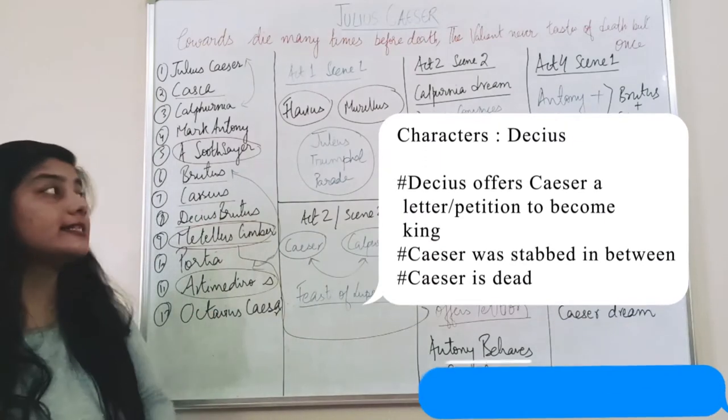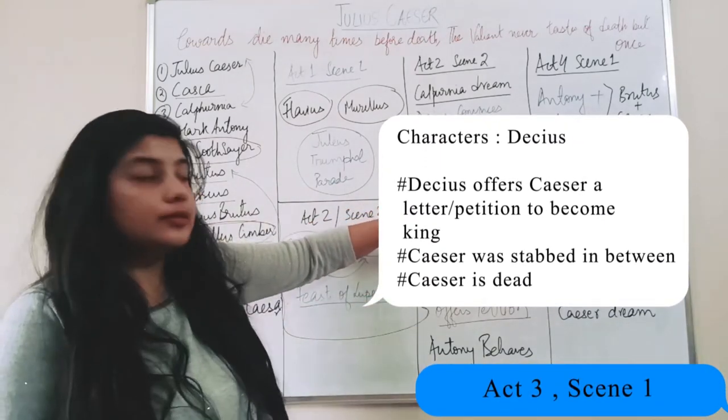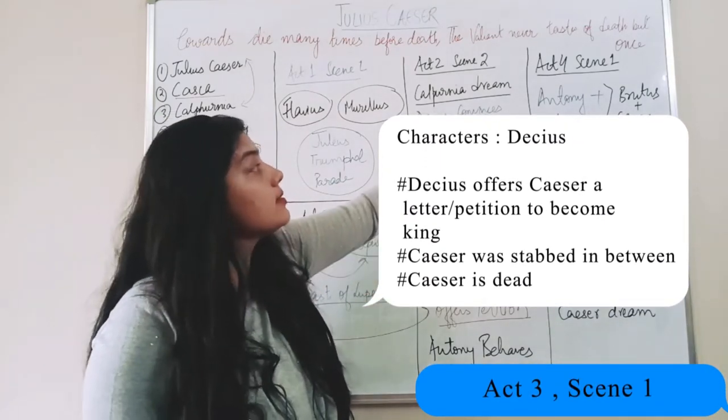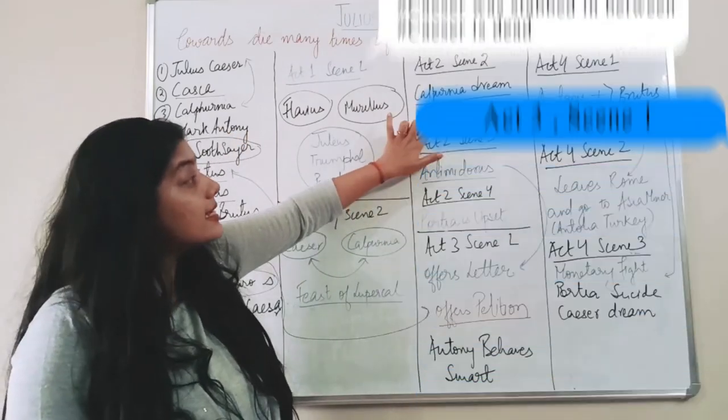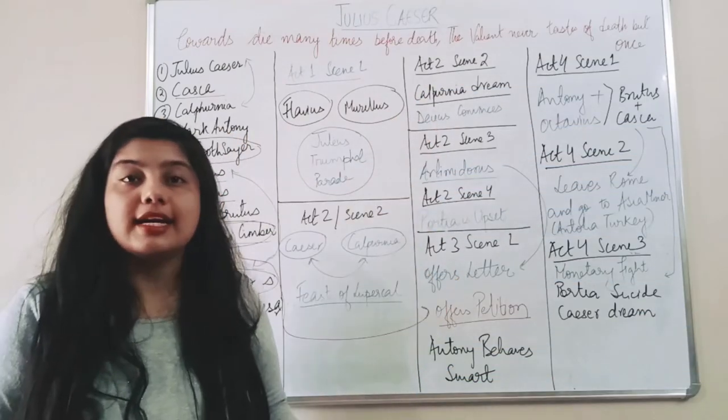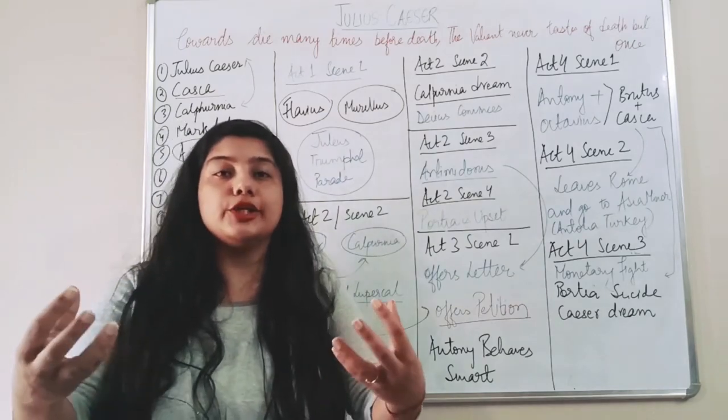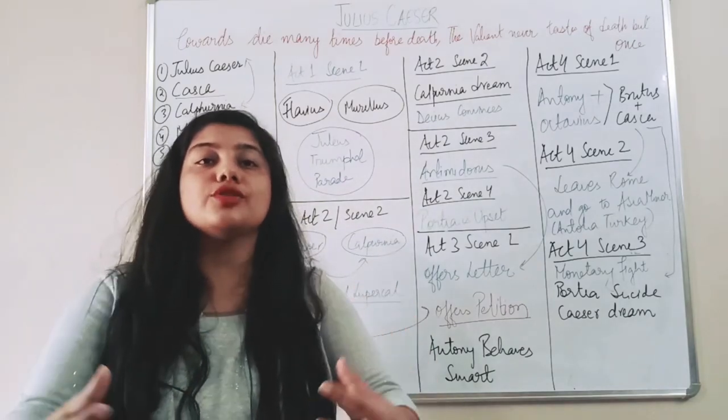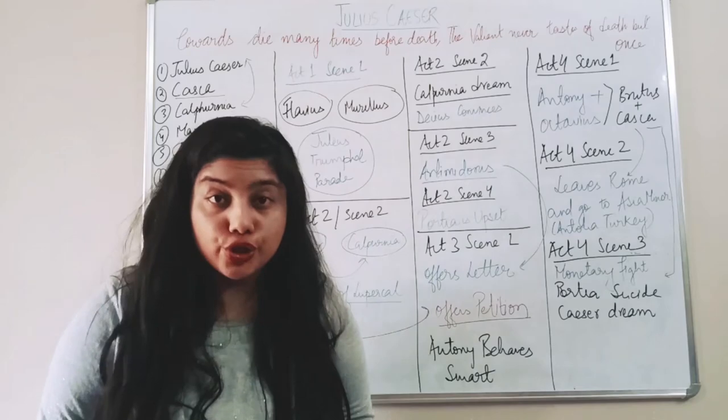Act 3 Scene 1. Now here the main story takes place. The same Artemidorus, Decius gives letter to Caesar. He offers him the letter that 'you take this petition, this petition is for you to become the king. Do you accept it?'